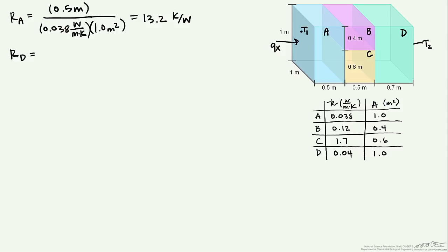Our RD will calculate the same way. So its resistance is 17.5 kelvin per watt.